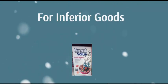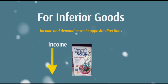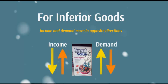For inferior goods, income and demand move in opposite directions. As income falls, demand for these rises — at lower incomes, you might have to eat more Fruit Bins. But when incomes rise, demand for these falls, and maybe you can go back to the name brand.